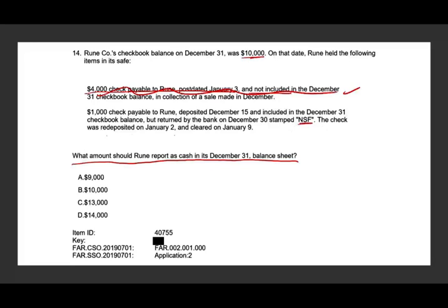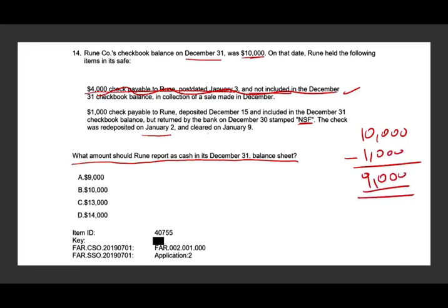The check was redeposited on January 1st and cleared January 9th. For this year, we have to back out the 1,000. Although it cleared in year two — redeposited January 1st, cleared January 9th — in year one, the year in question, that check was no good because we don't know if it will clear in January. Therefore the answer is 9,000 (answer A). For that year, as far as we know, the money was not there. We redeposited hoping the money would be there, but we cannot make that assumption.